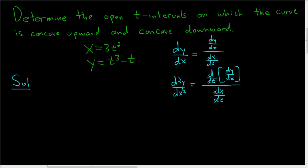So in this problem, we're being asked to find out where the curve is concave up and concave down, so we have to look at the second derivative. If the second derivative is positive, it's going to be concave up. If the second derivative is negative, it's going to be concave down. So let's go ahead and do it.